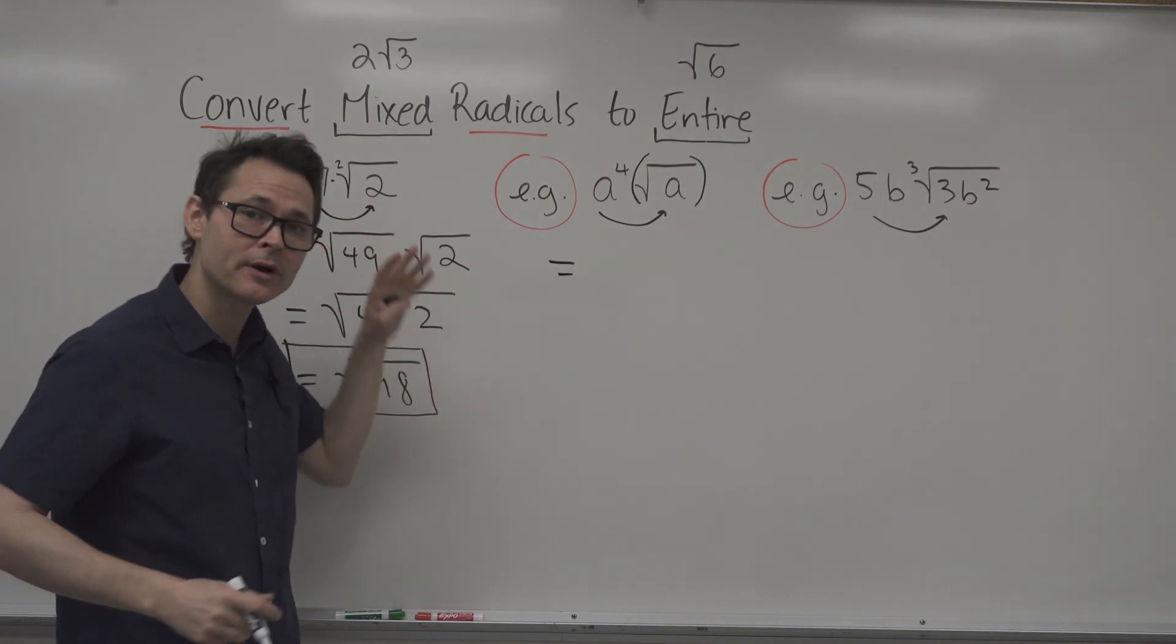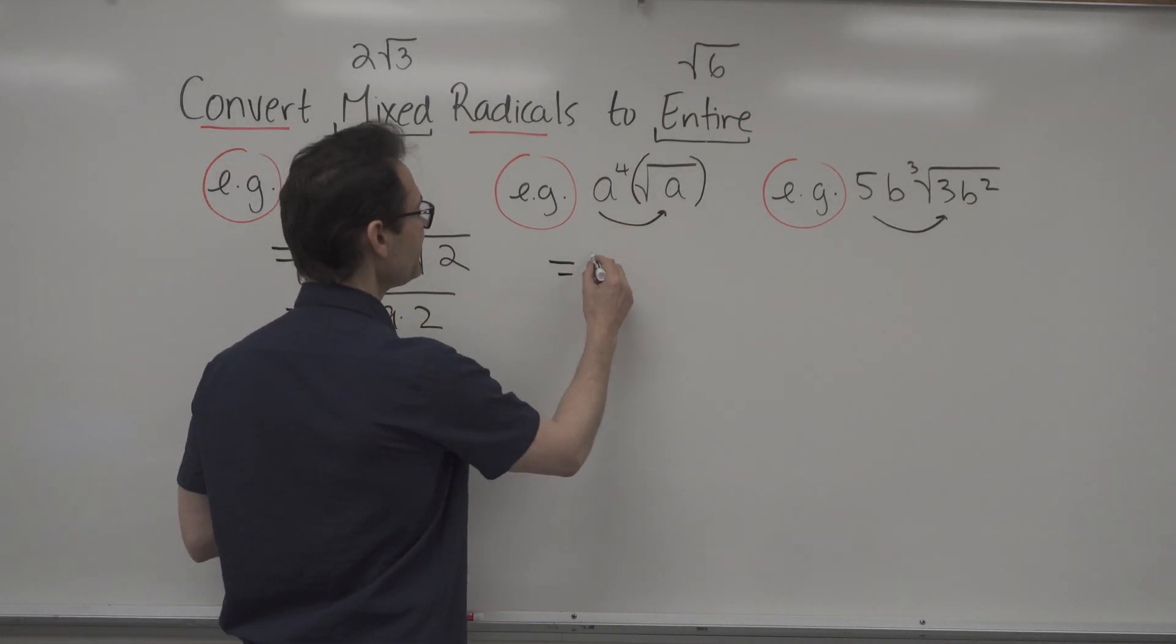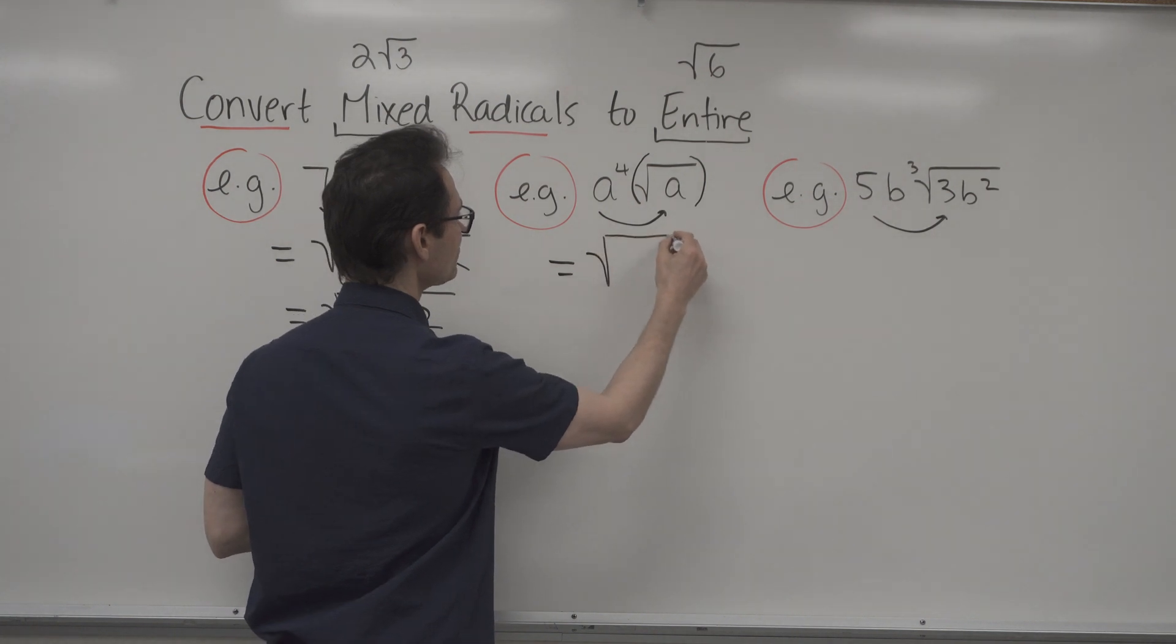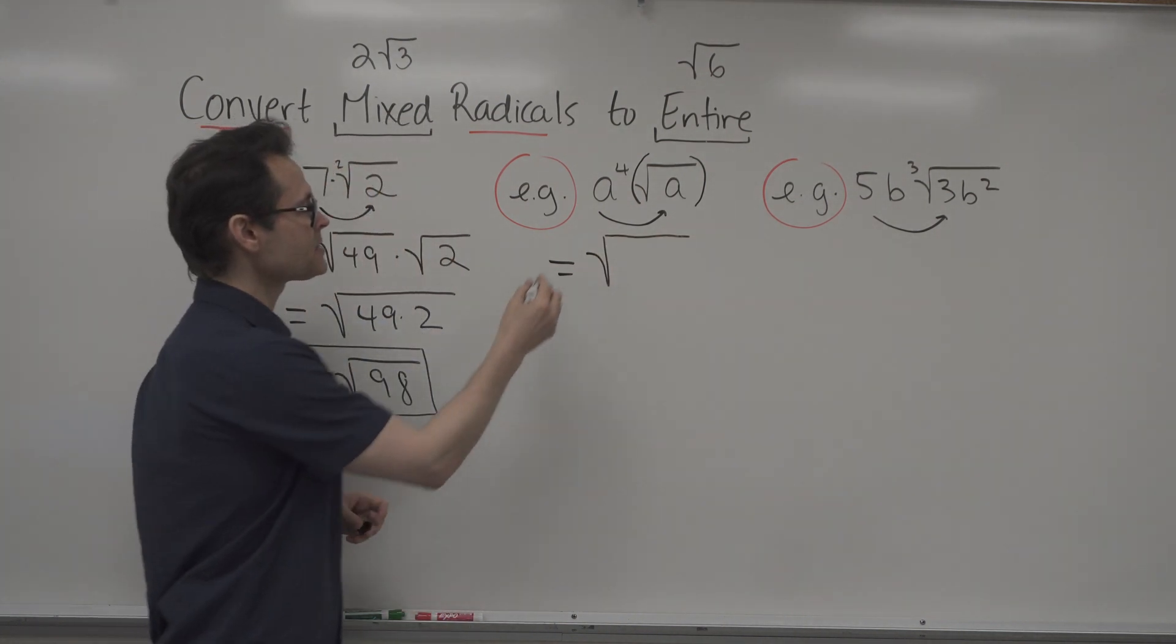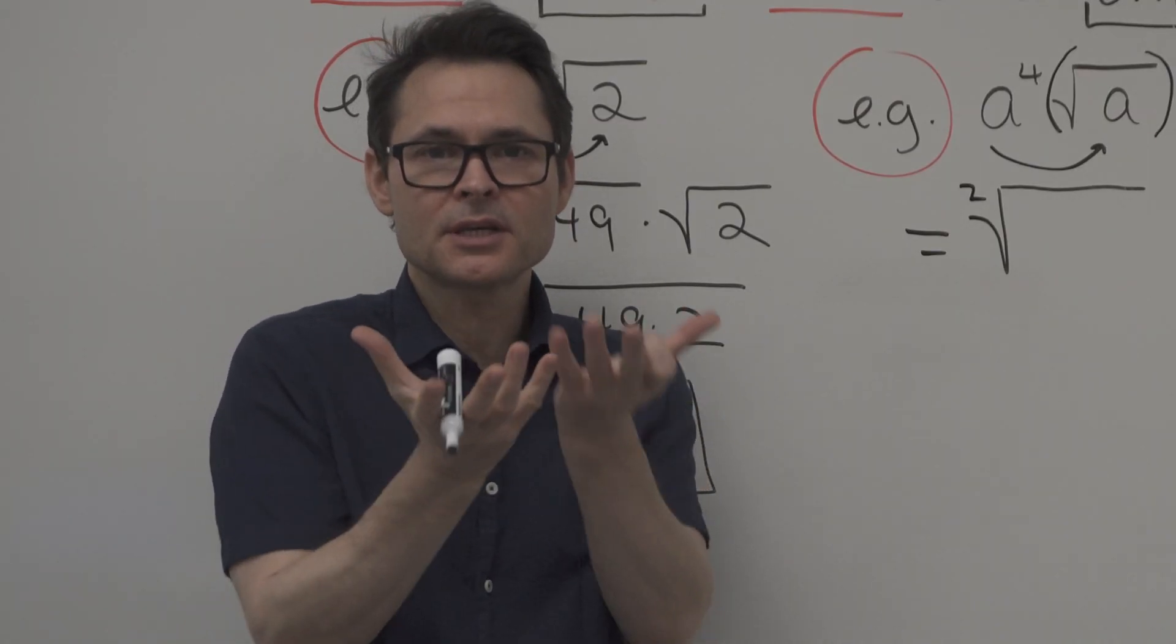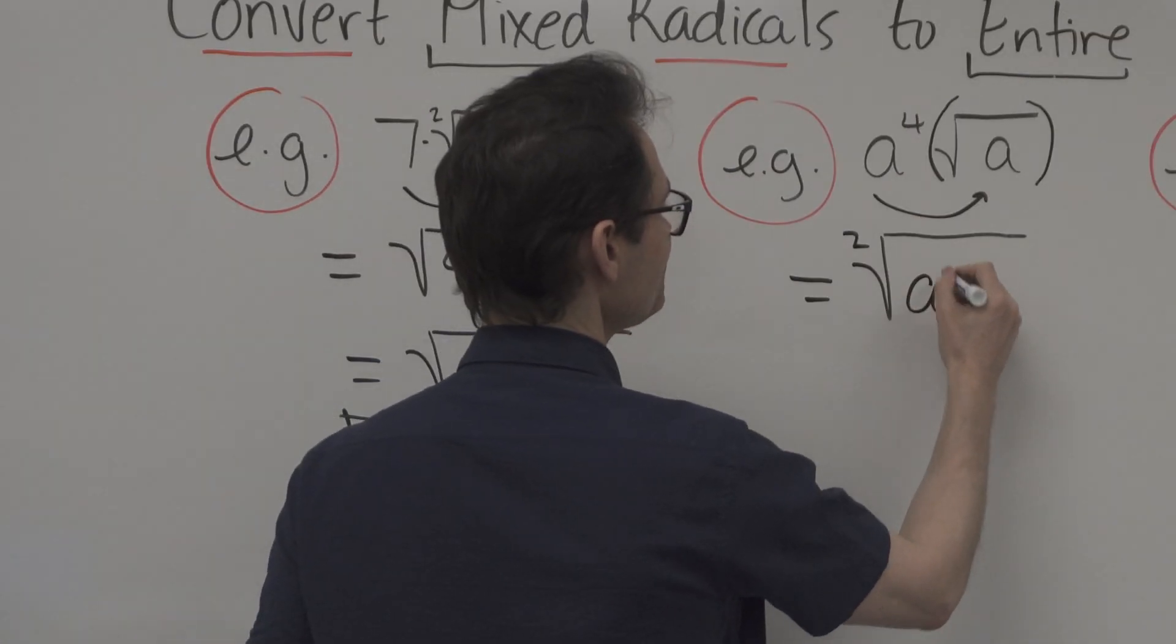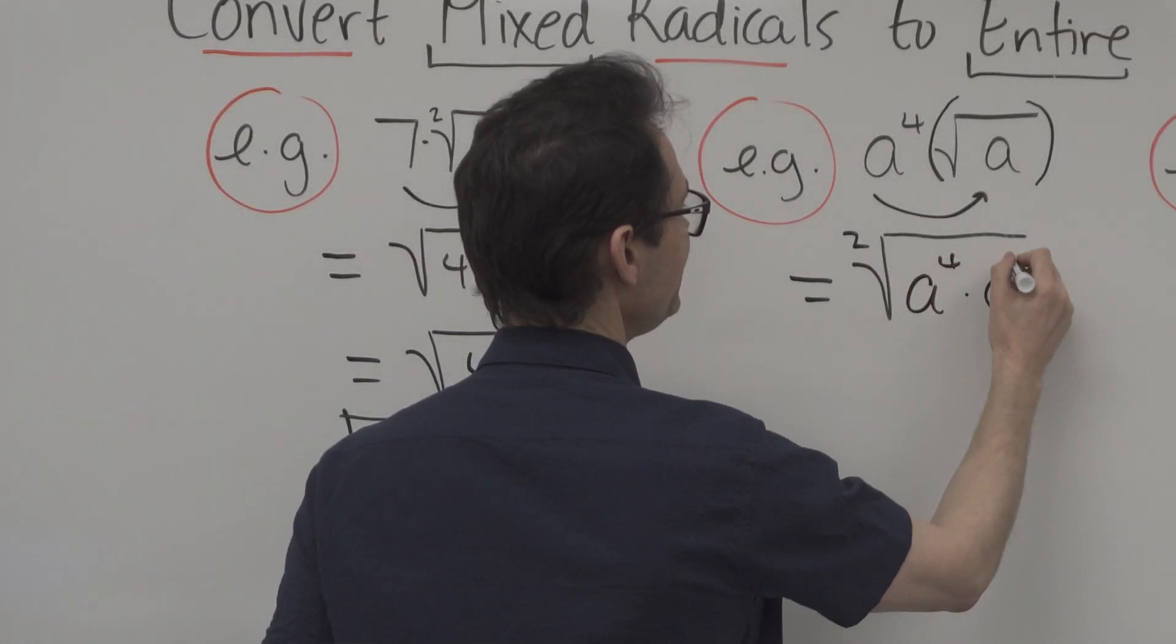So let's bring the A to the 4 inside. So if I want to bring it inside the radical, what I can do is know that I'm bringing it into a square root. So what that means is that number is going to show up two times. So I'm going to write it as A to the 4 times A to the 4.